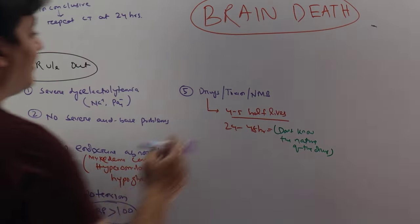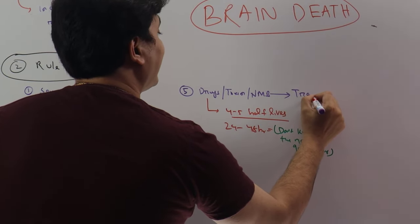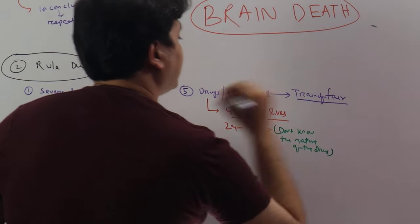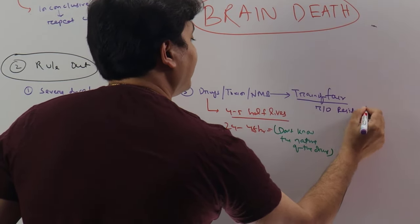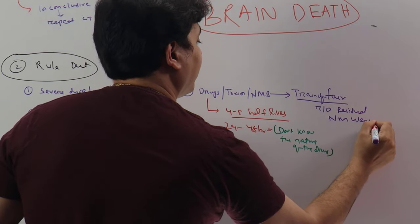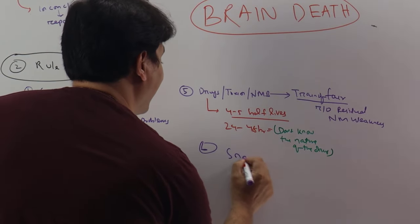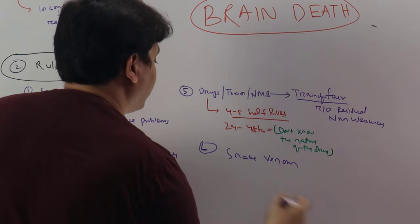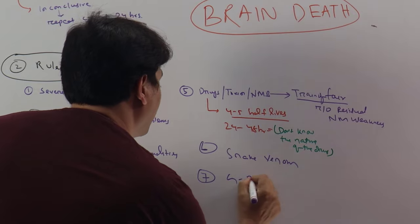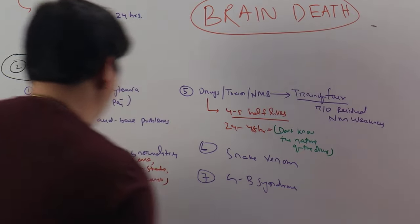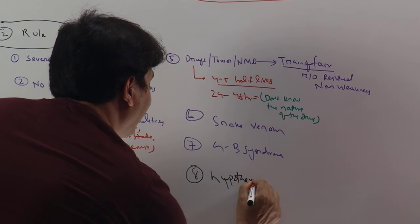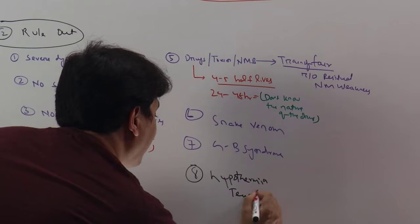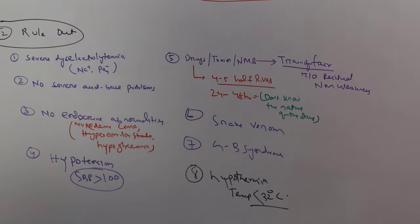In case we have given the patient a neuromuscular blocking agent, you can do what is called train of four. That is done to rule out any residual neuromuscular weakness. Number six, the patient can have snake venom inside. The patient can be having Guillain-Barré syndrome. The most important will be hypothermia. The patient should not be in hypothermia. By definition, temperature should not be less than 32 degrees Celsius. This is one important concept you have to remember.